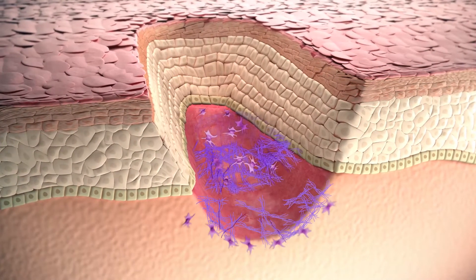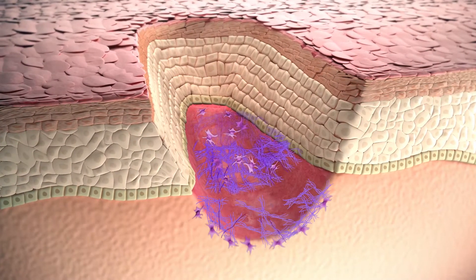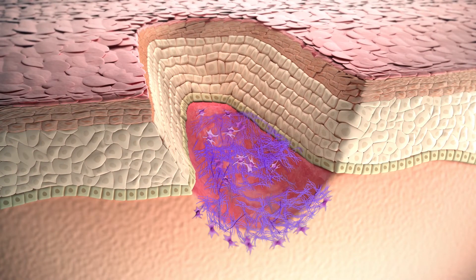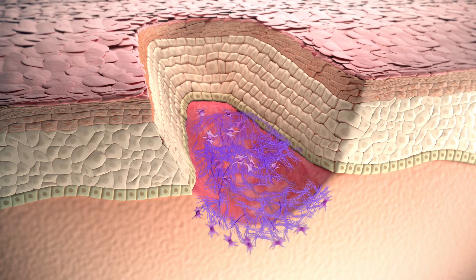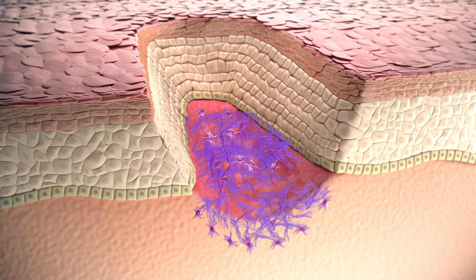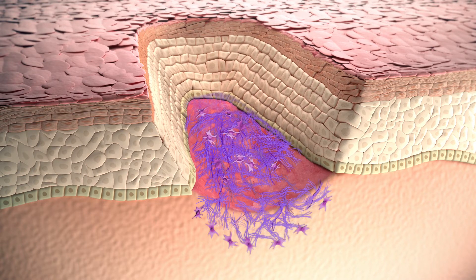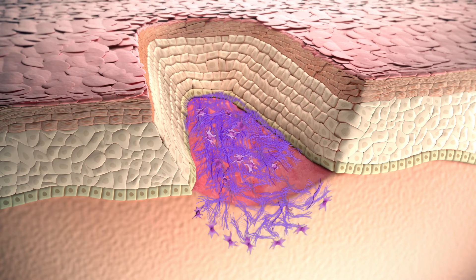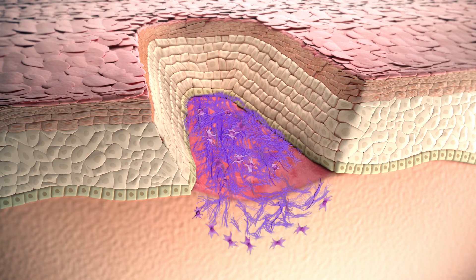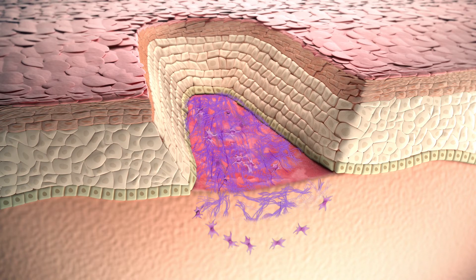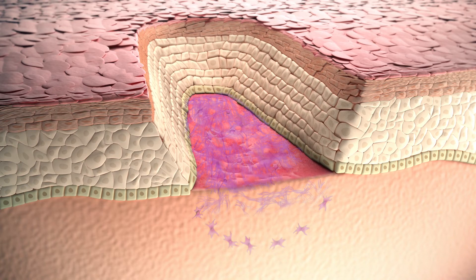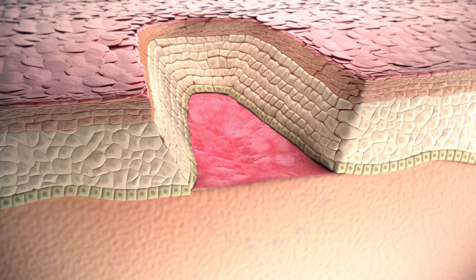Hyaluronan contributes to the new ECM architecture thanks to its capability of assembling large proteoglycan aggregates. In the meantime, basal keratinocytes detach from the dermoepidermal basal membrane and start a migration and proliferation process inside the wound bed.